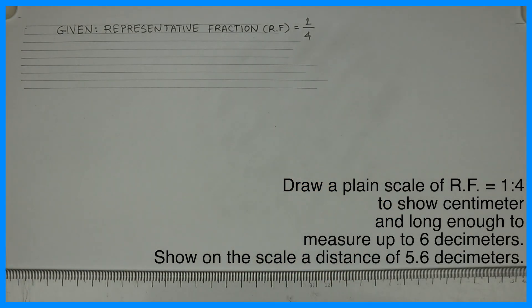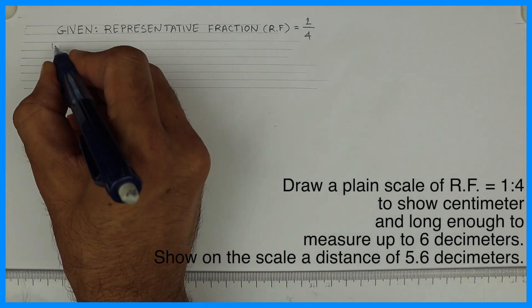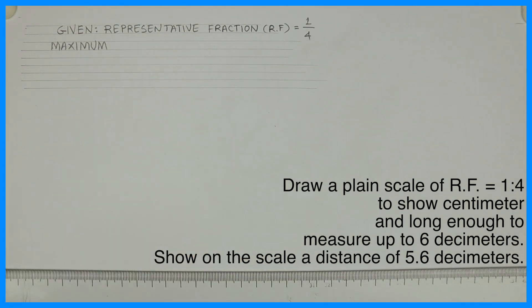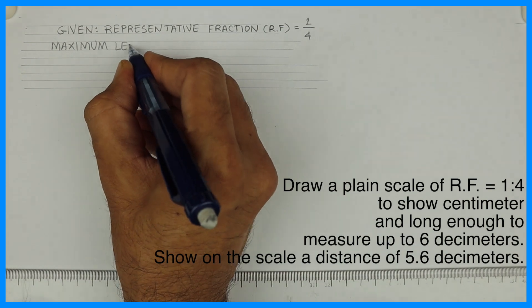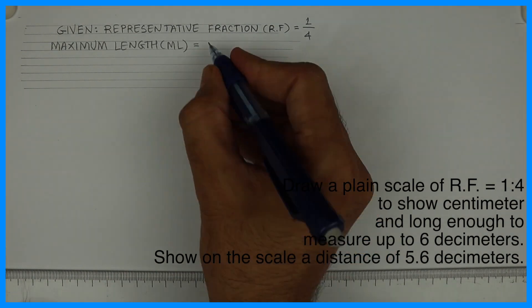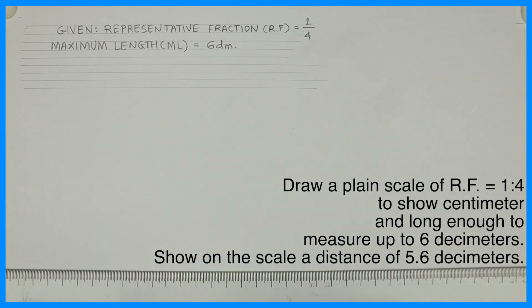Then they have given long enough to measure up to 6 decimeters. So maximum length is how much? 6 decimeter. So write maximum length which is ML equals to 6 decimeter.